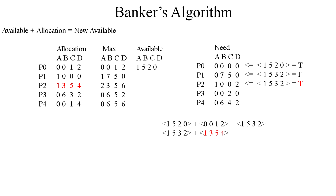So we repeat what we did with P0. We move the available, which is 1, 5, 3, 2, down below and add 1, 3, 5, 4 — which is P2 from the allocation matrix — to get our new available. Next we take that new available and compare it to P3. If 0, 0, 2, 0 is less than or equal to 2, 8, 8, 6, which is true, we repeat the process again.